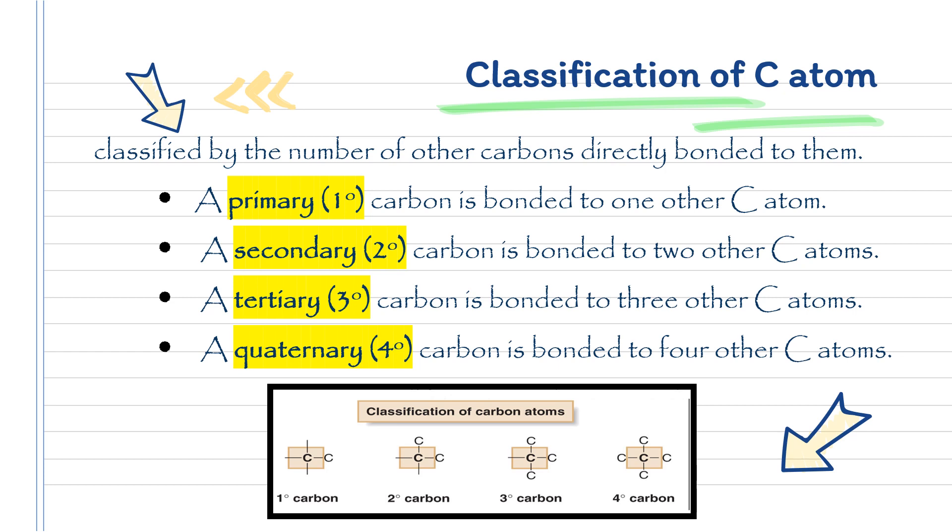A primary carbon is classified when the carbon is bonded to one other carbon atom.